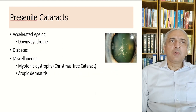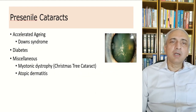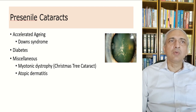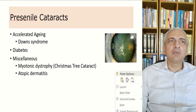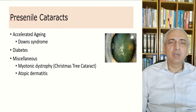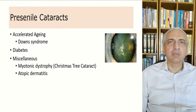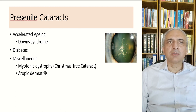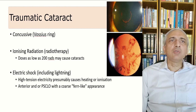Pre-senile cataracts occur earlier than expected and include accelerated aging, Down syndrome, diabetes, and miscellaneous causes such as myotonic dystrophy and atopic dermatitis. Christmas tree cataract is one of the features seen in myotonic dystrophy.